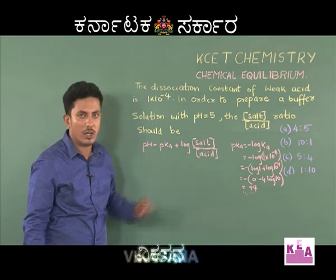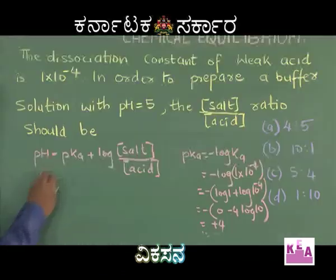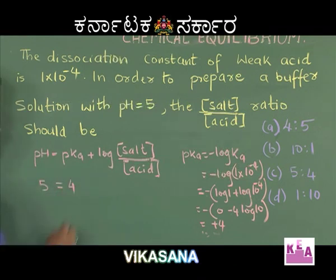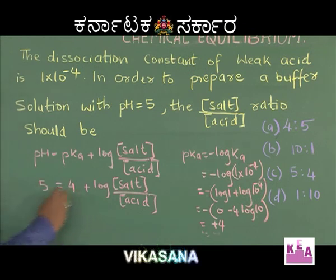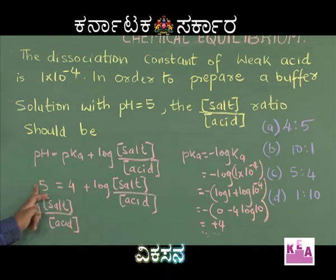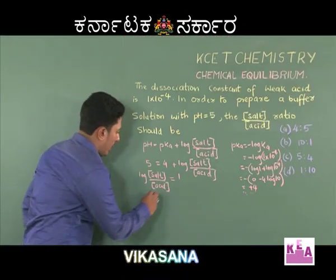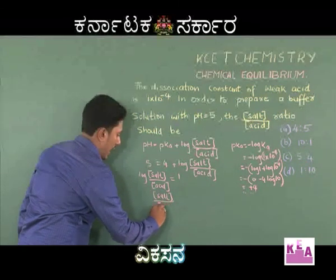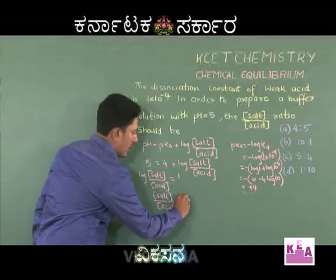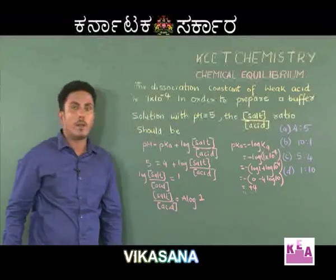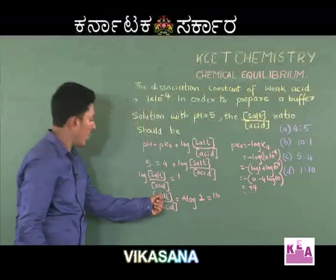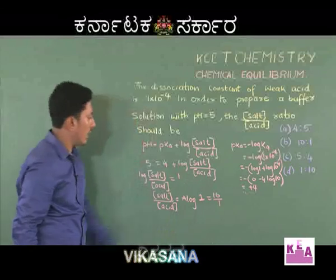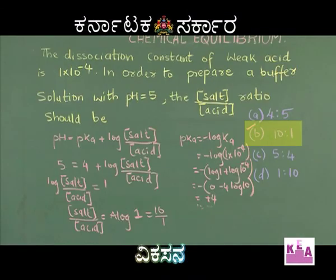Now substituting into Henderson's equation: pH = pKa + log([salt]/[acid]). pH is given as 5 and pKa = 4, so 5 = 4 + log([salt]/[acid]), giving log([salt]/[acid]) = 1. Taking antilog: [salt]/[acid] = antilog(1) = 10. Since log 10 = 1, antilog(1) = 10, so the ratio is 10/1, meaning salt to acid ratio is 10:1. Therefore, option B is the right answer.